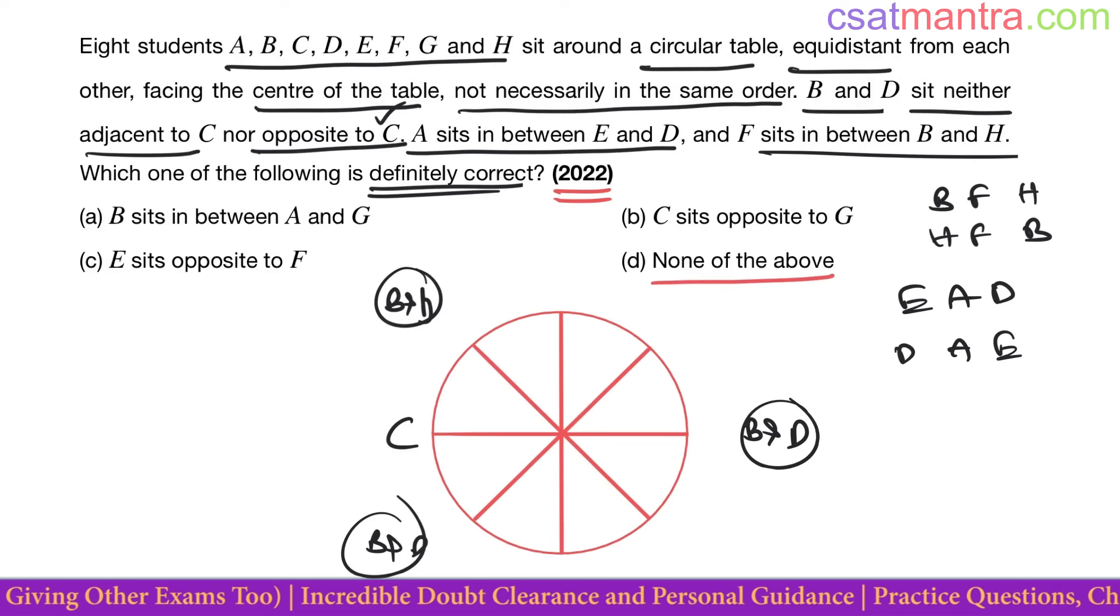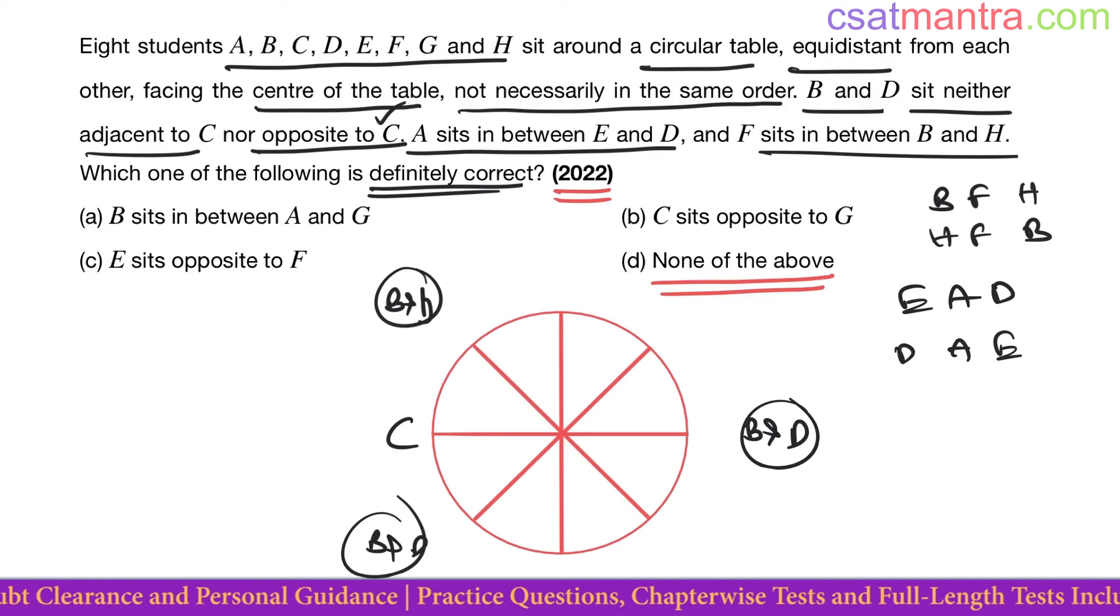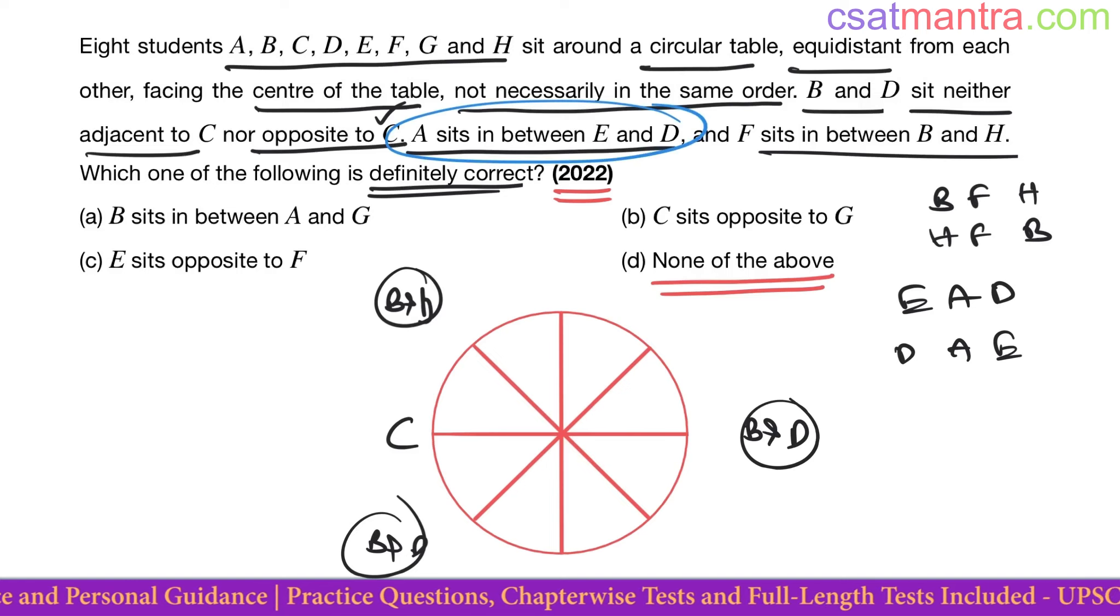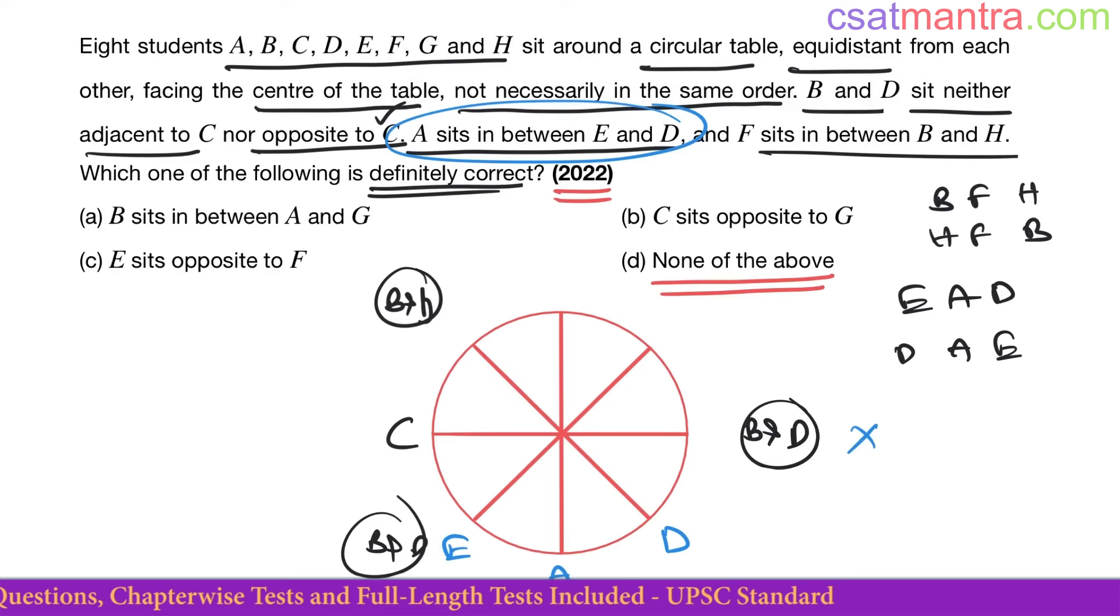We have one of the options as 'none of the above.' Let's see if we can disprove remaining options. A sits between E and D. I am taking E position here, A position here, D position here. I am taking this possibility, this is one of the possibilities.